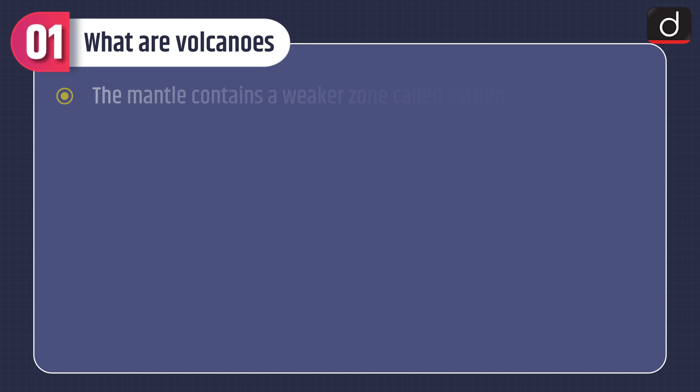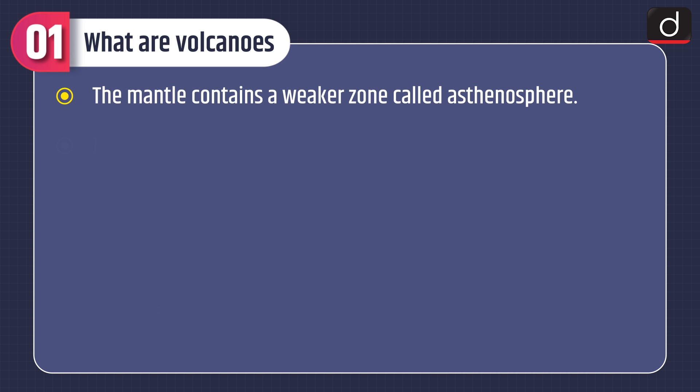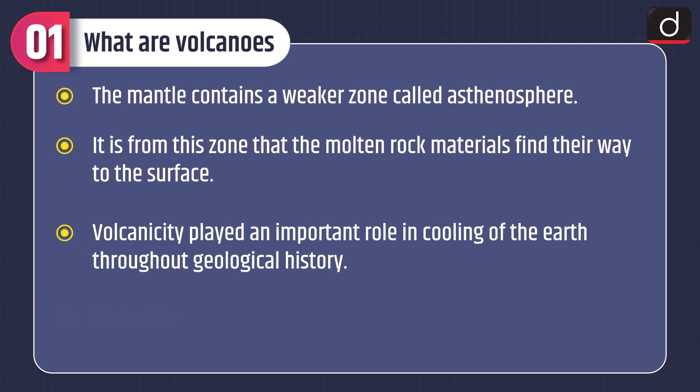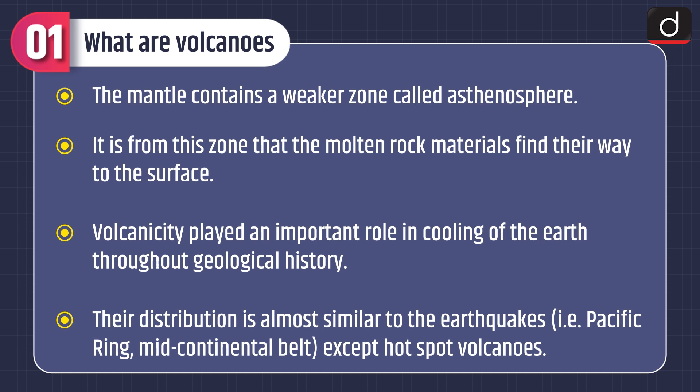The mantle contains a weaker zone called the asthenosphere. It is from this zone that the molten rock materials find their way to the surface. Volcanicity played an important role in cooling of the Earth throughout geological history. Their distribution is almost similar to the earthquakes — i.e., the Pacific ring and mid-continental belt — except hotspot volcanoes.